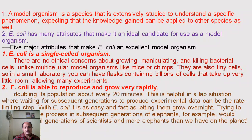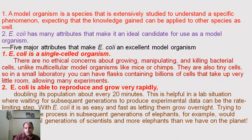The first attribute is that E. coli is a single-cell organism with no ethical concerns about growing, manipulating, cultivating, or killing bacterial cells, unlike multicellular model organisms like mice or other animals. They are also very small cells — in a small laboratory, you can have a flask containing billions of cells taking up very little space, which allows for many experiments.